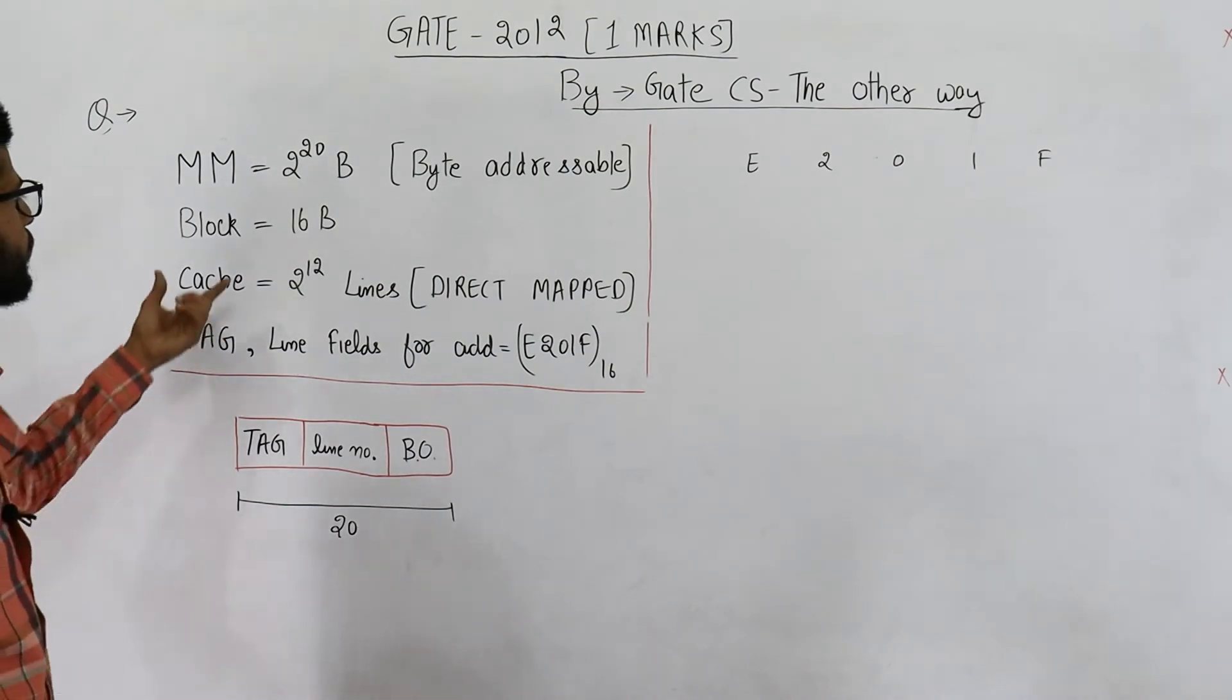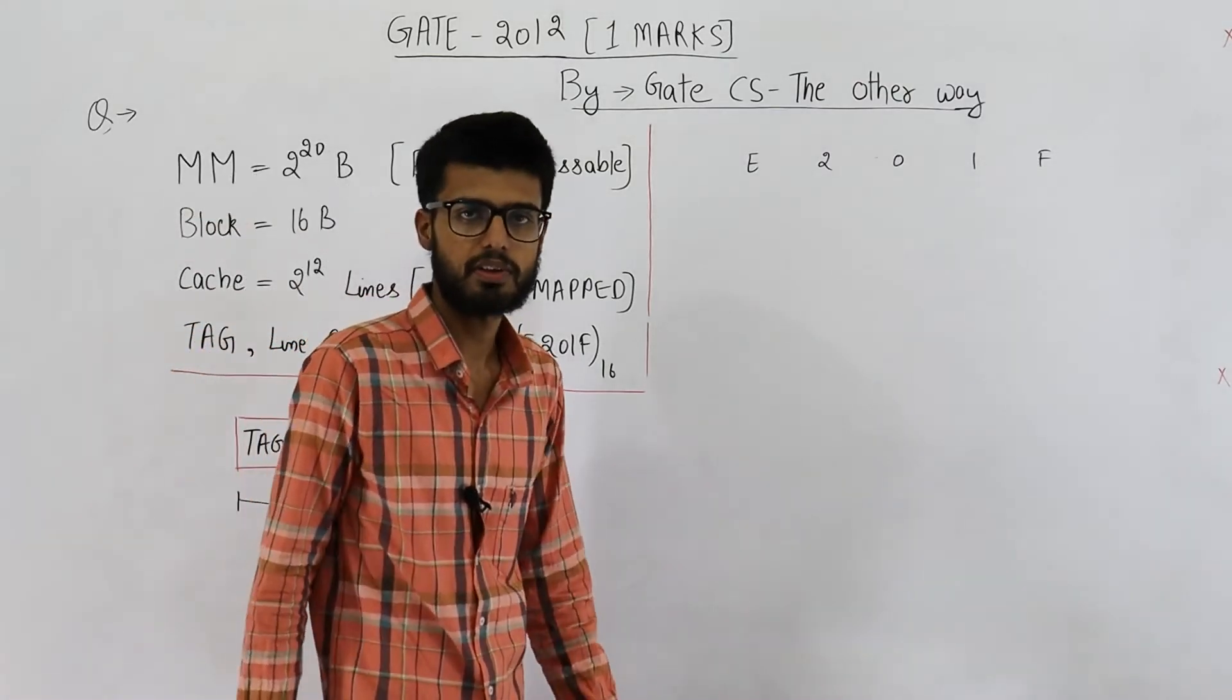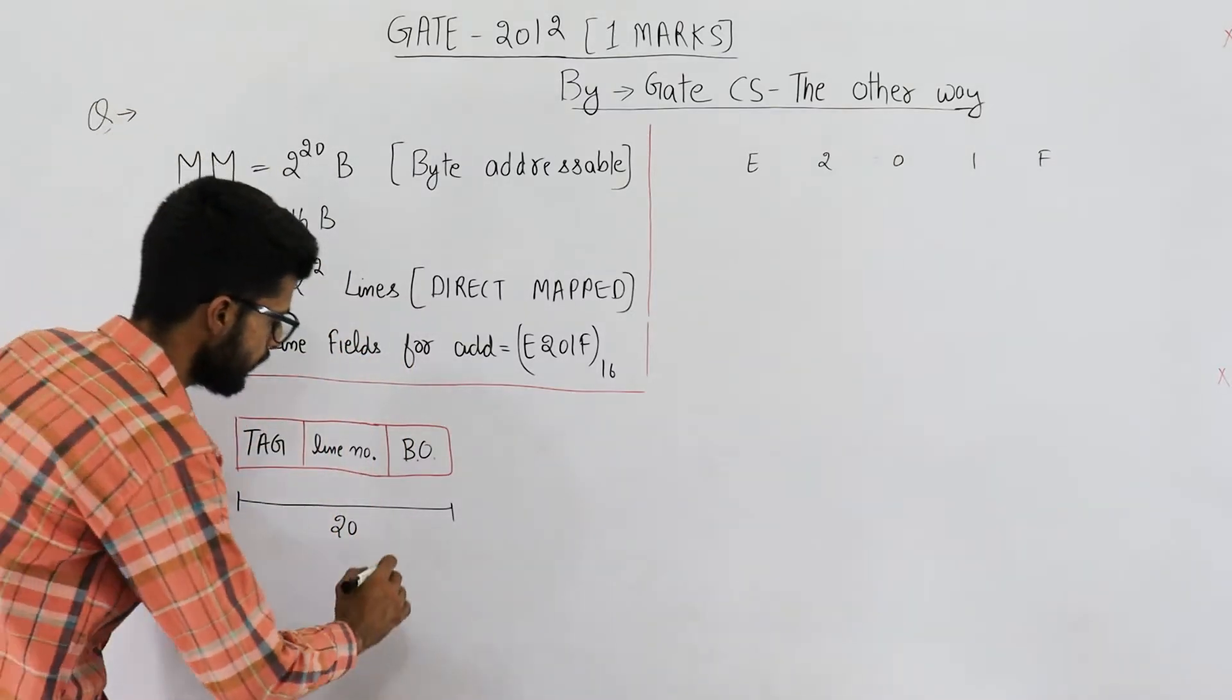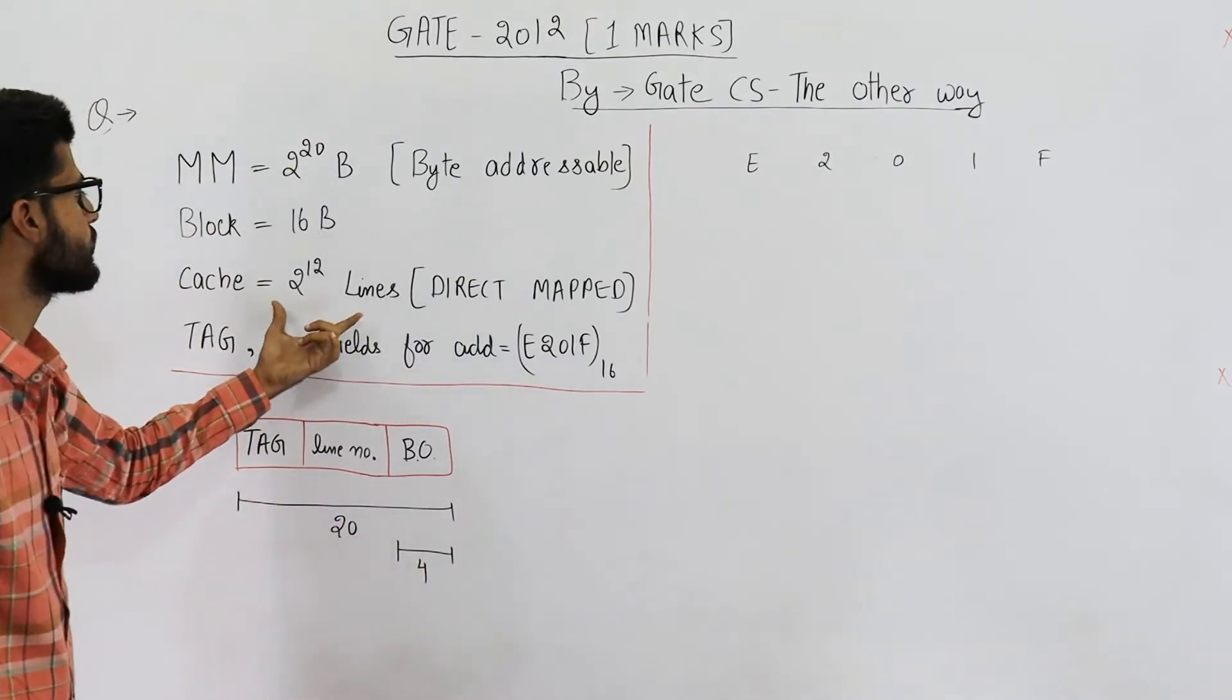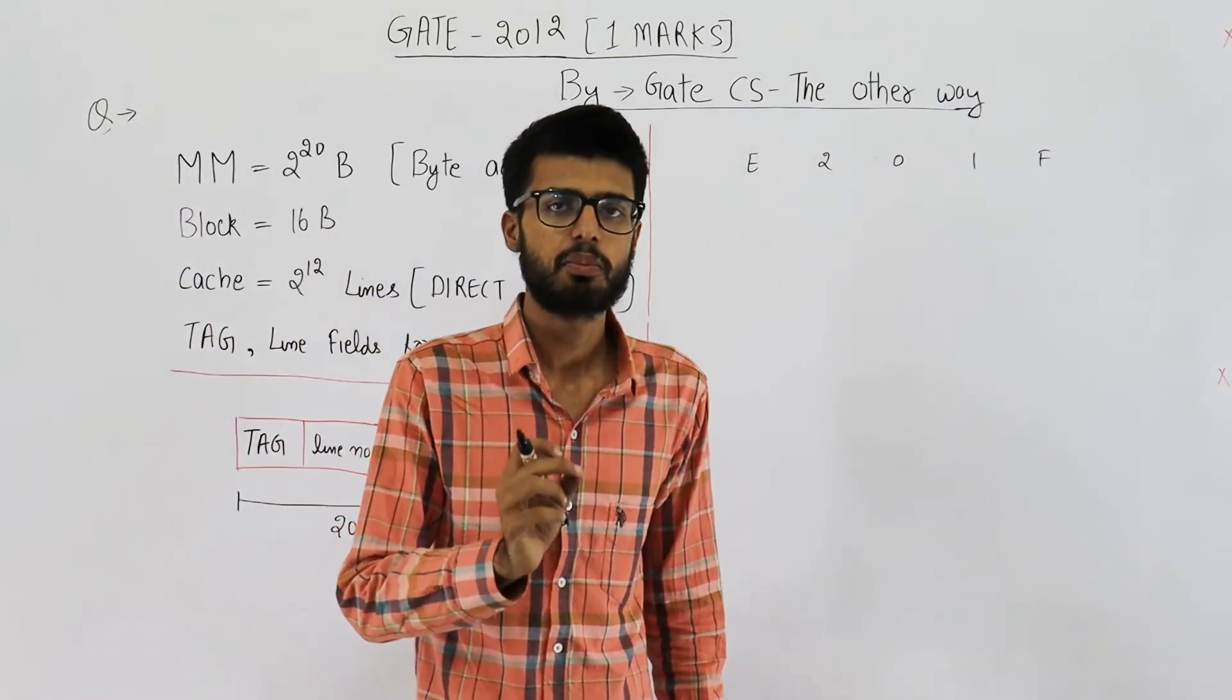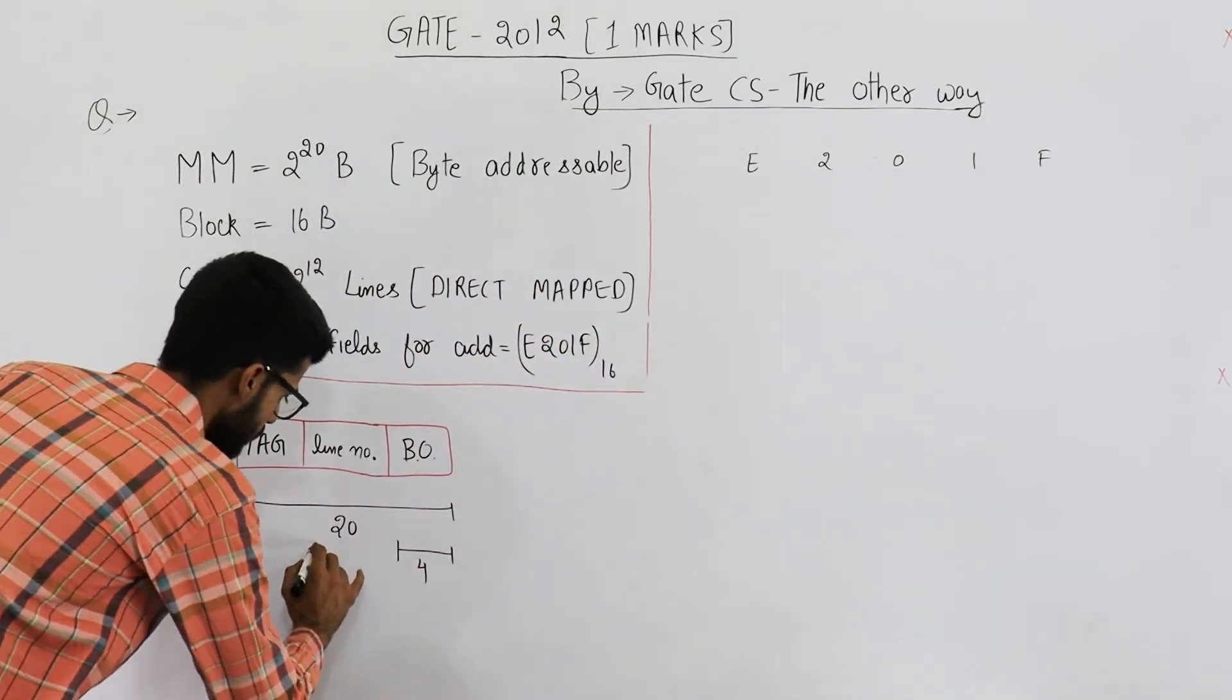Now block is 16 bytes or 16 words because the memory is byte addressable. Cache has 2^12 lines. That means to identify one line there will be exactly 12 bits.